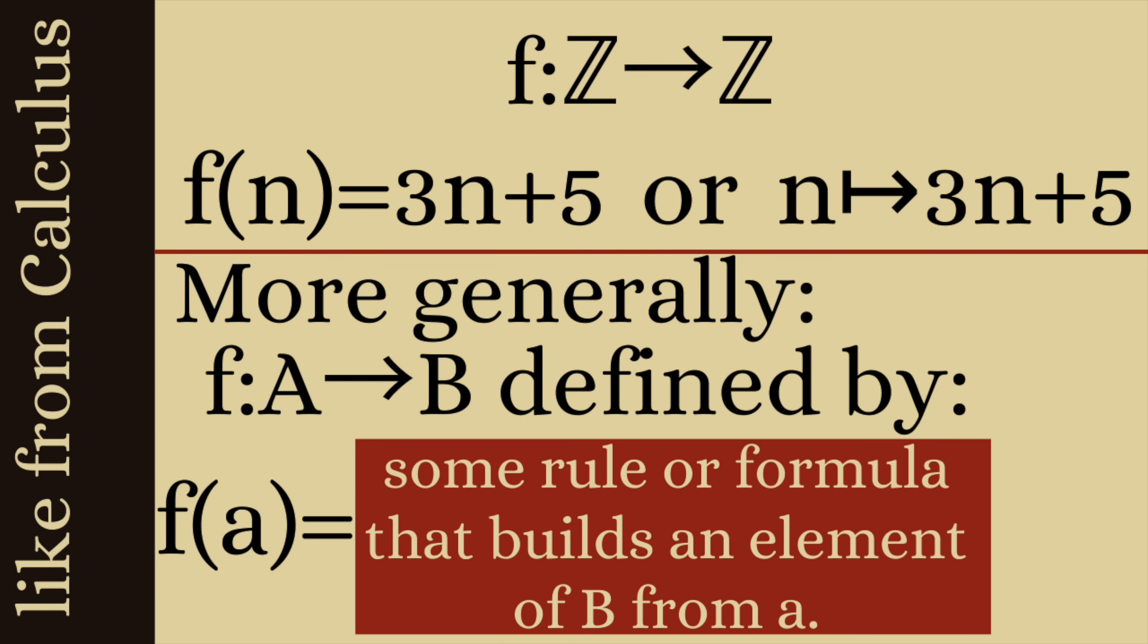So we have a function f from Z to Z. So very strictly speaking that's a subset of Z cross Z and it takes n and it sends it to 3n plus 5. So we could write that down as f(n)=3n+5 or n is being sent to 3n+5.